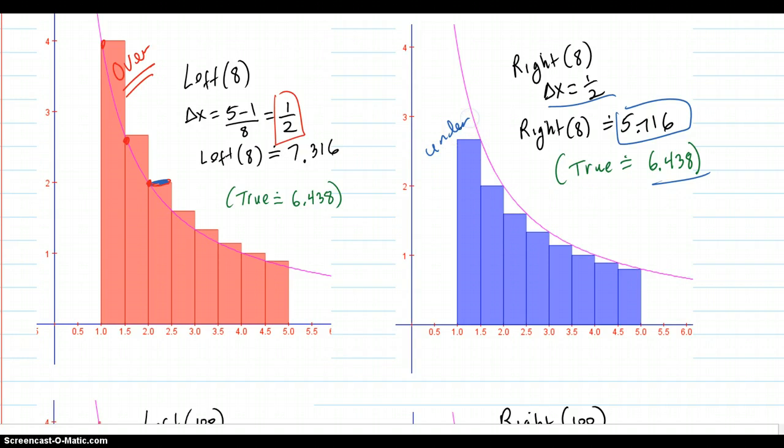And, of course, these are under because the curve happens to be decreasing, monotonic. So that, of course, the right end points of each subinterval give you an underestimate in every case.